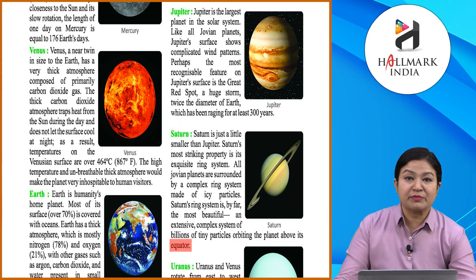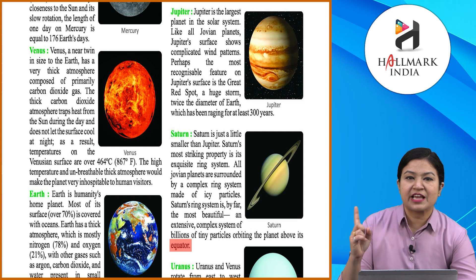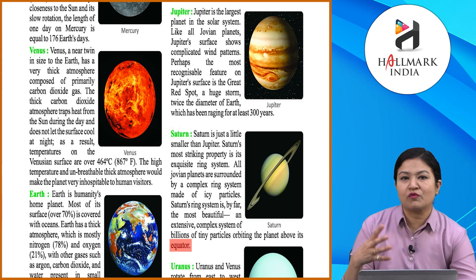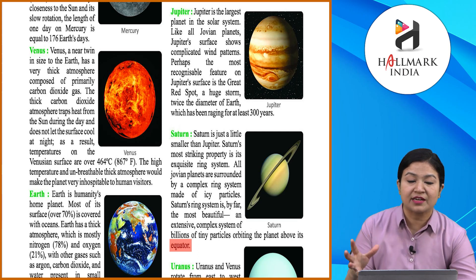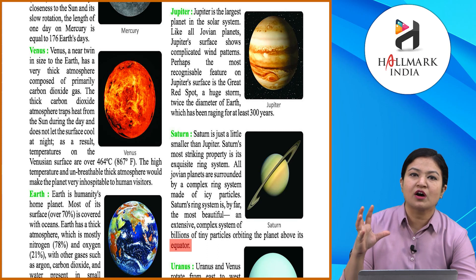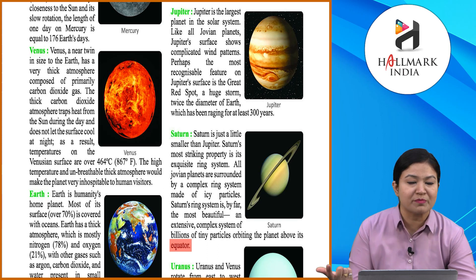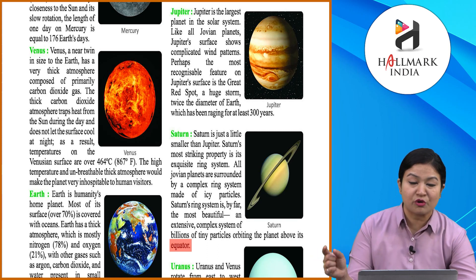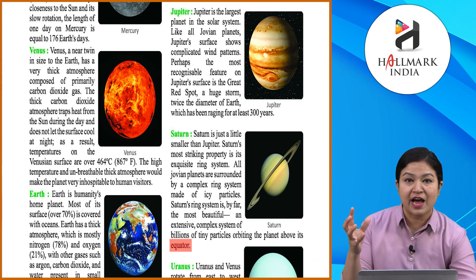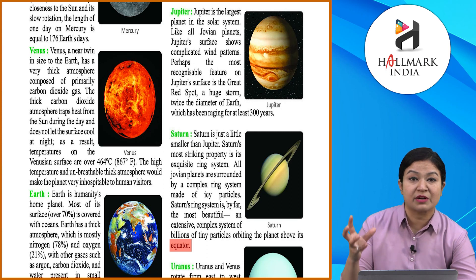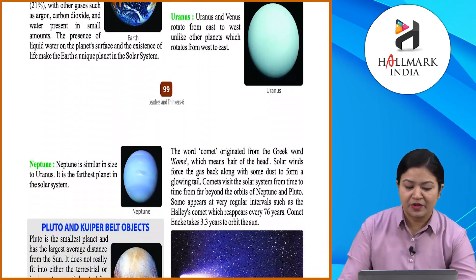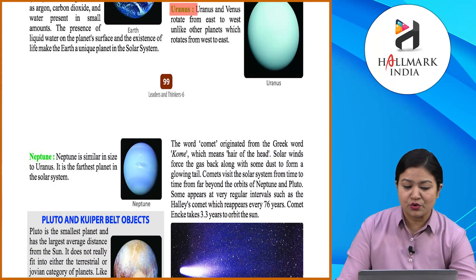Among the Jovian planets, all have rings, but Saturn's rings are most visible. The other Jovian planets' rings are not as visible. These rings are made of icy particles that surround the planet.